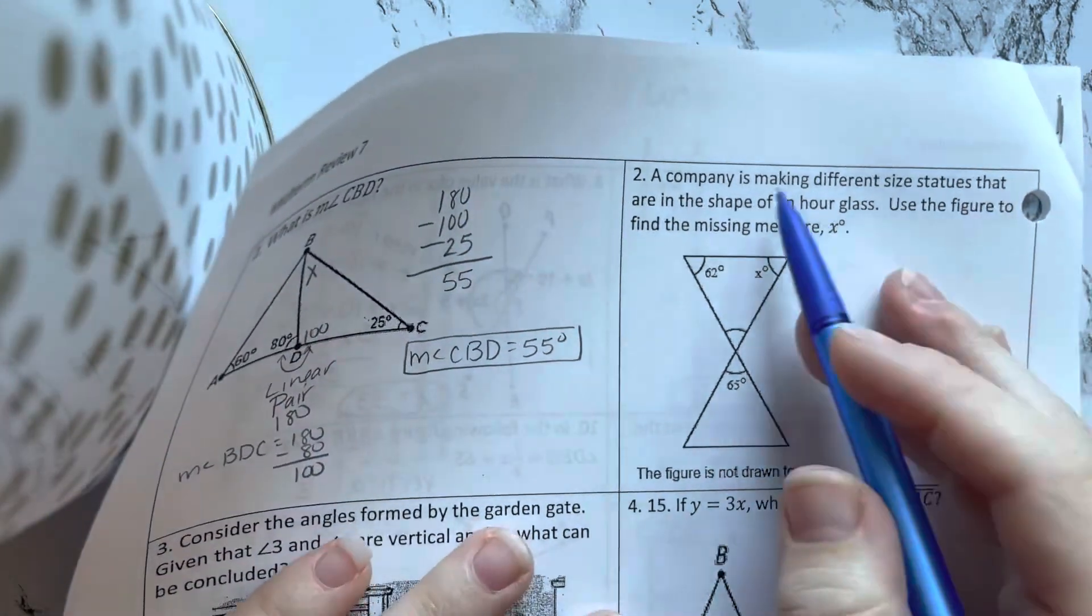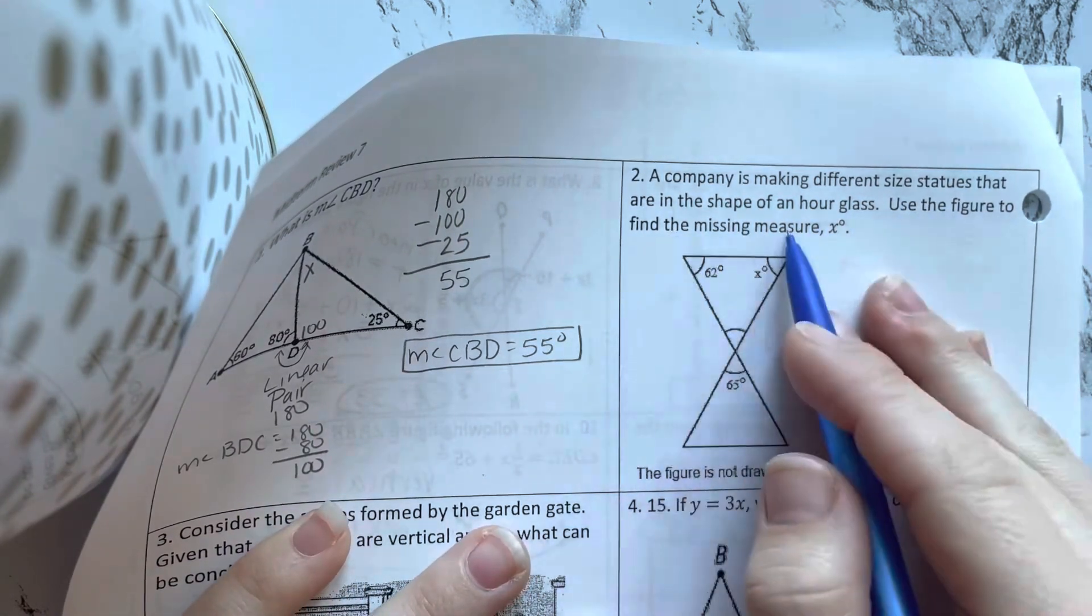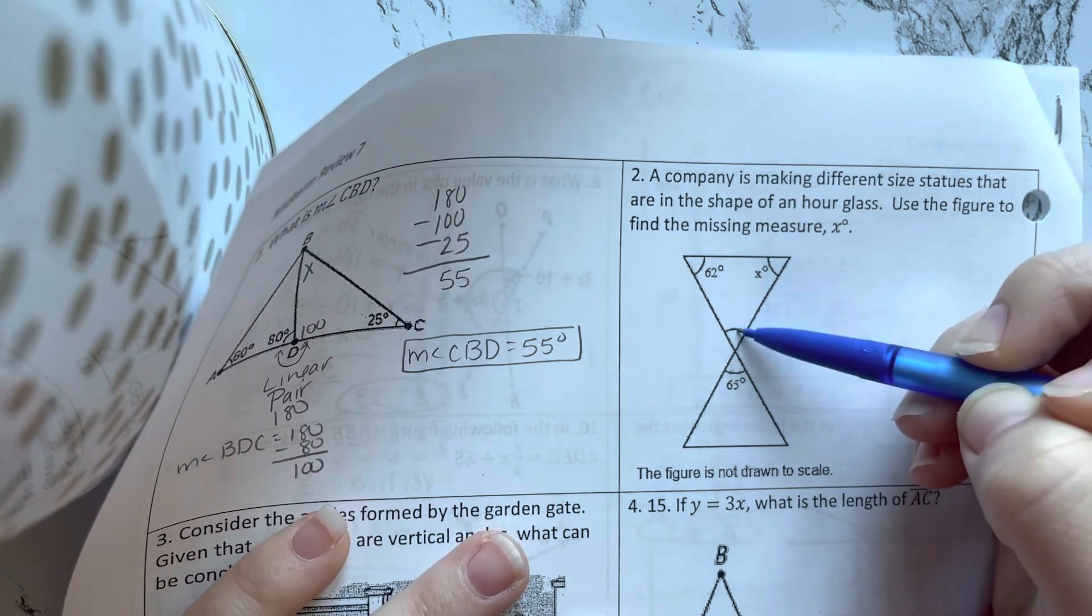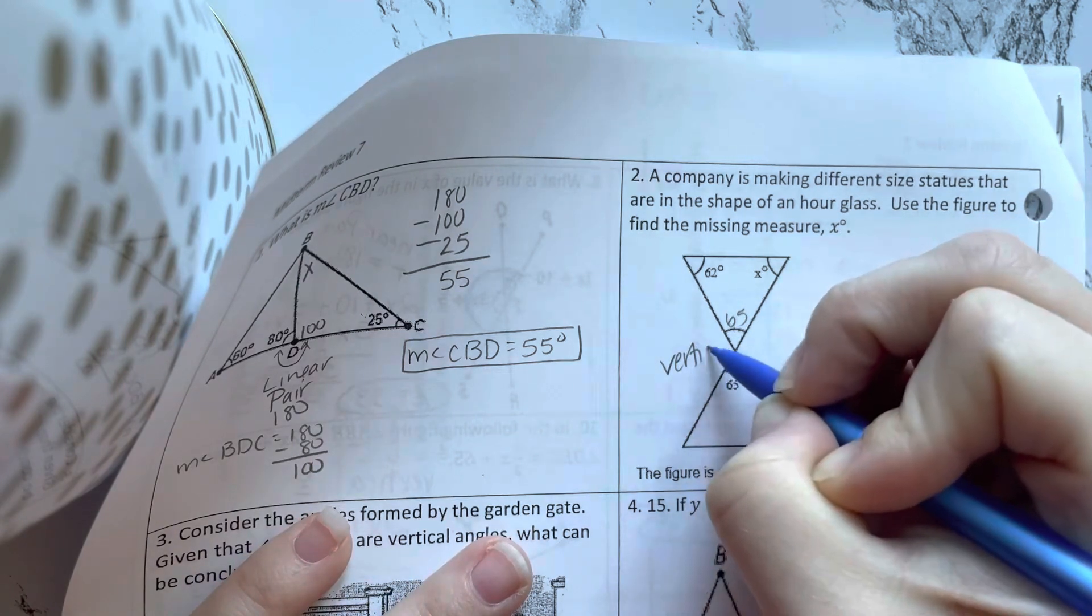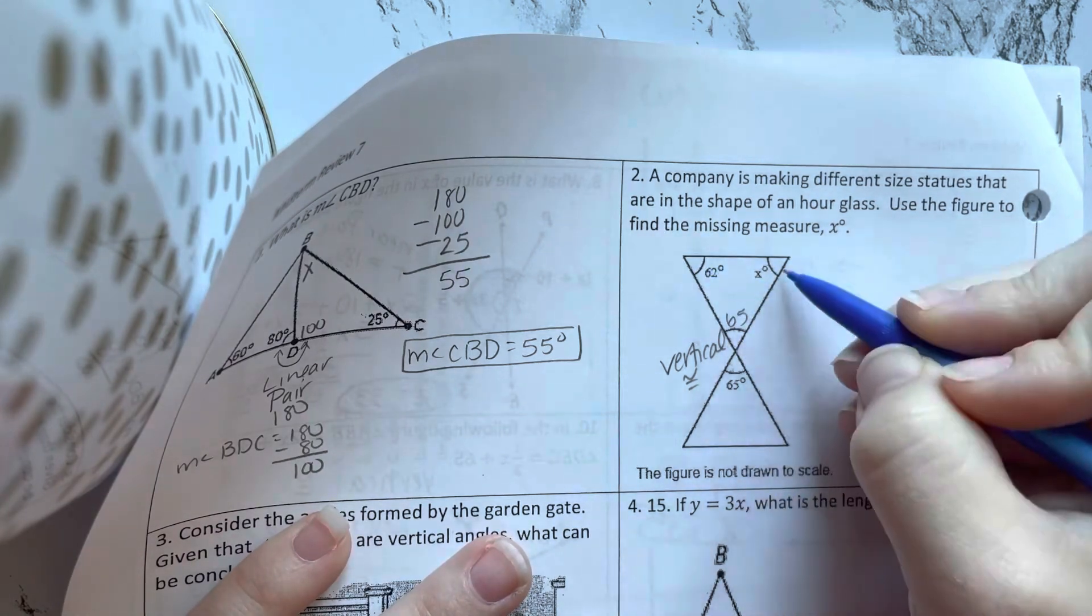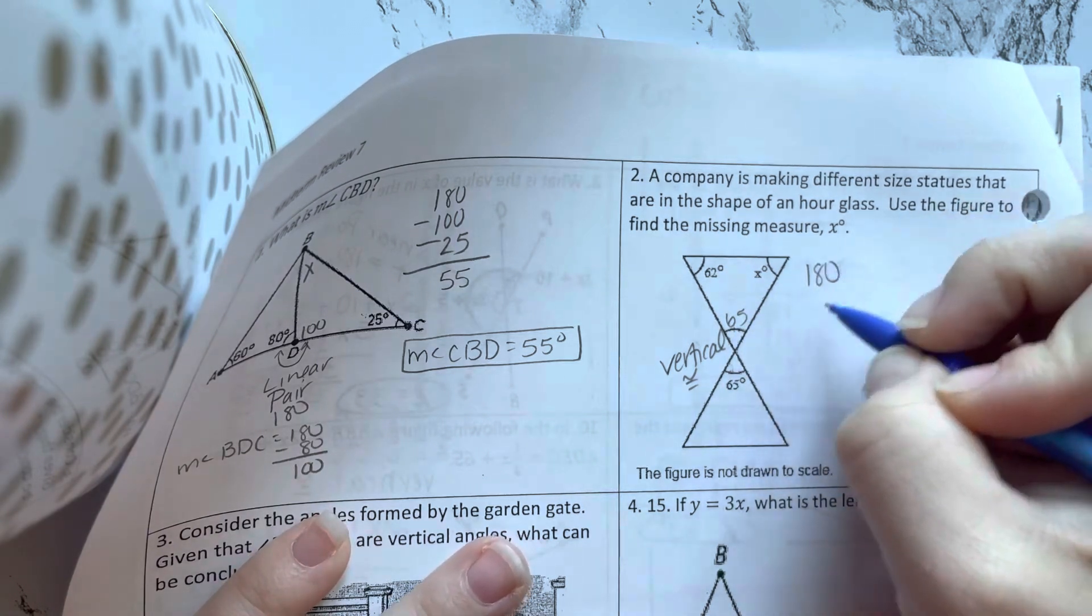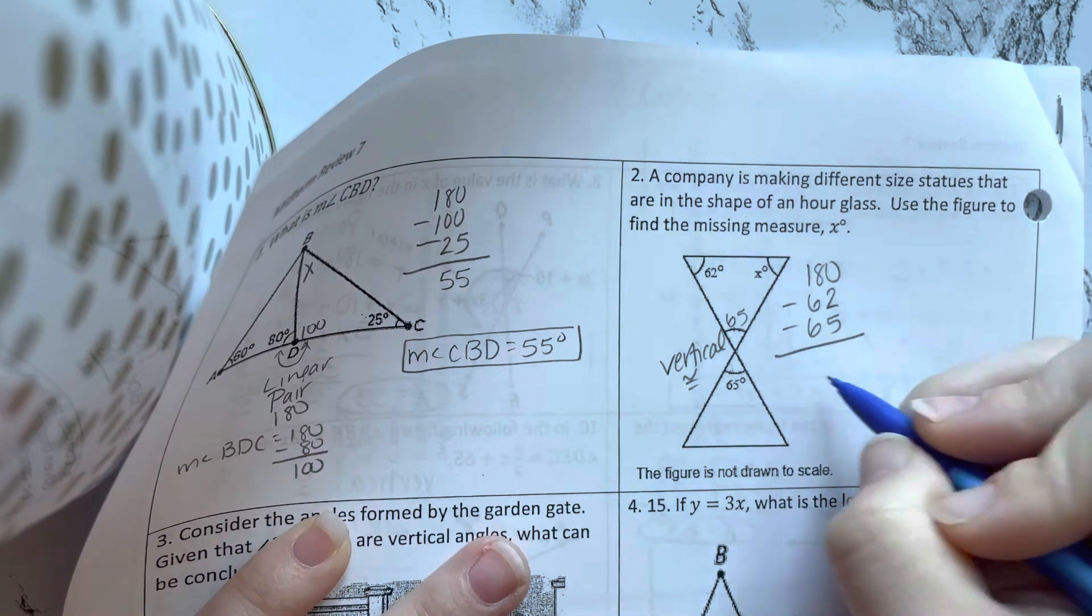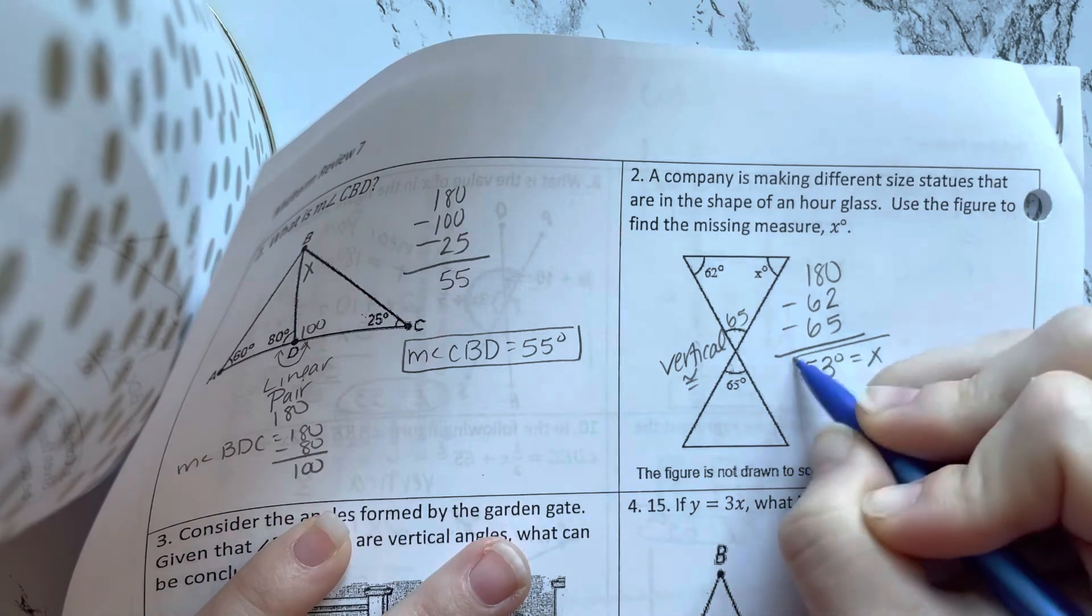All right, a company is making different size statues that are the shape of an hourglass. Use the figure to find the missing measure of X. All right, so these are vertical angles. So if this is 65, so is this again. Vertical are congruent. Now I have all three angles here. X is one of the three. I know these two. We know all three angles in the triangle add to 180. So let's subtract the ones we know. I get 53 for X.